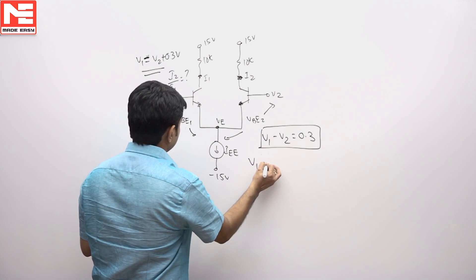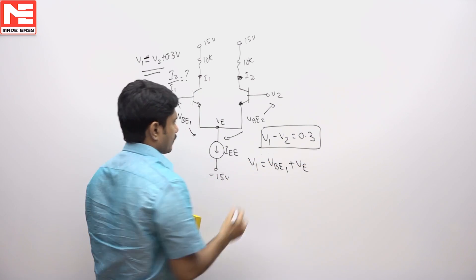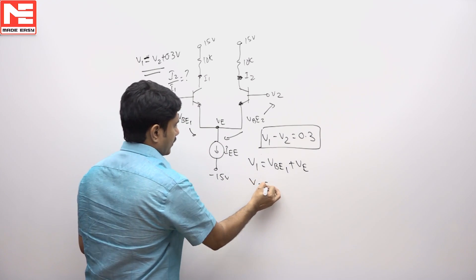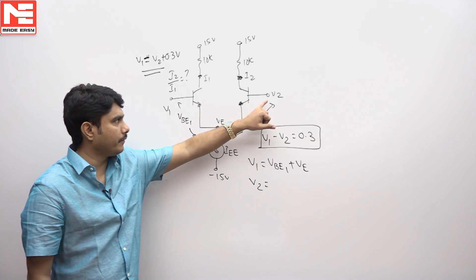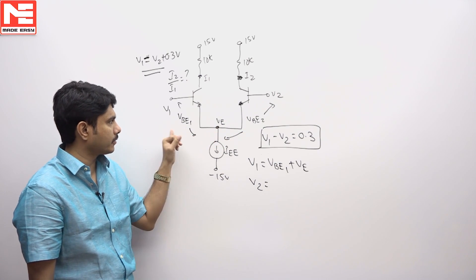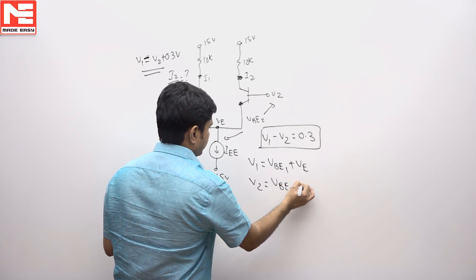So if I take V1, this VB1 plus VE that is called V1. So what is V2, this side voltage V2 is equal to VB2 plus VE because VE is common for both potentials. So VB2 plus VE.